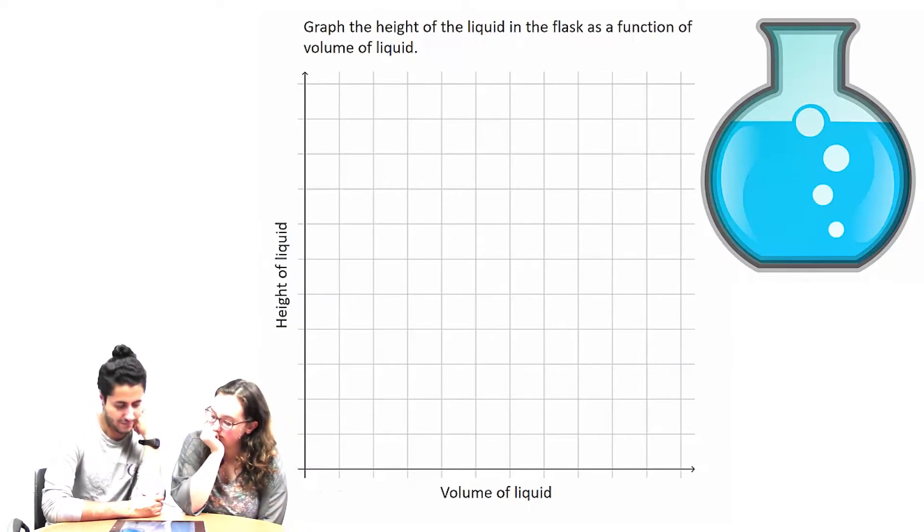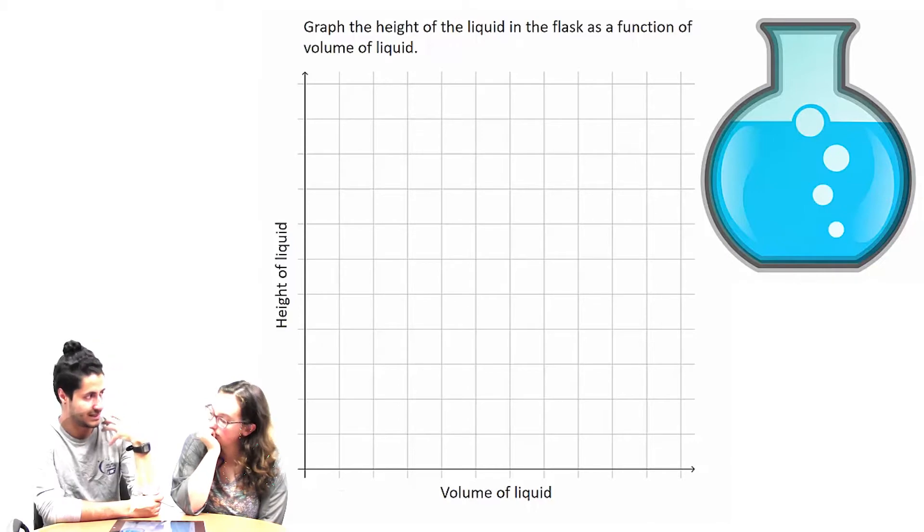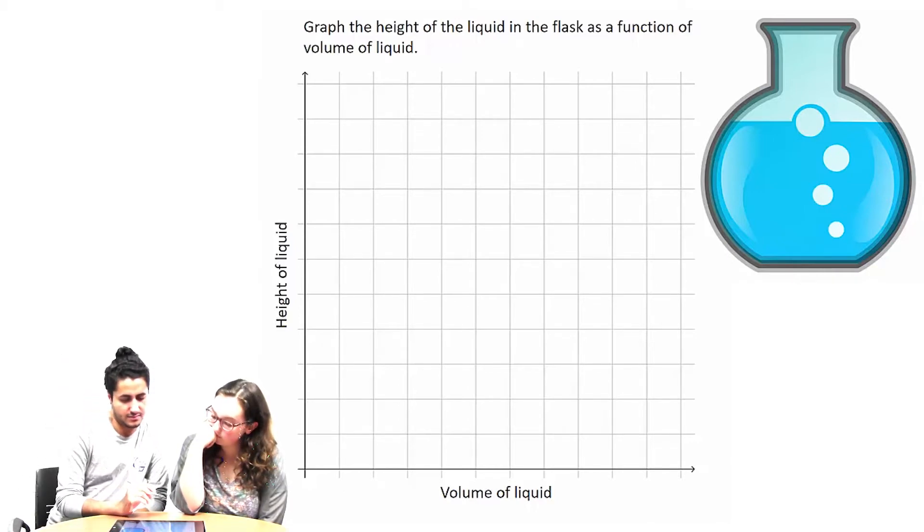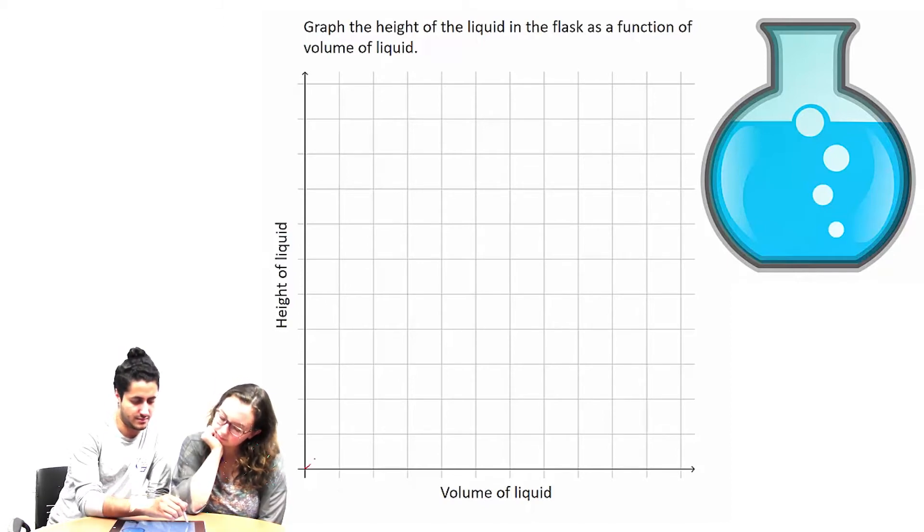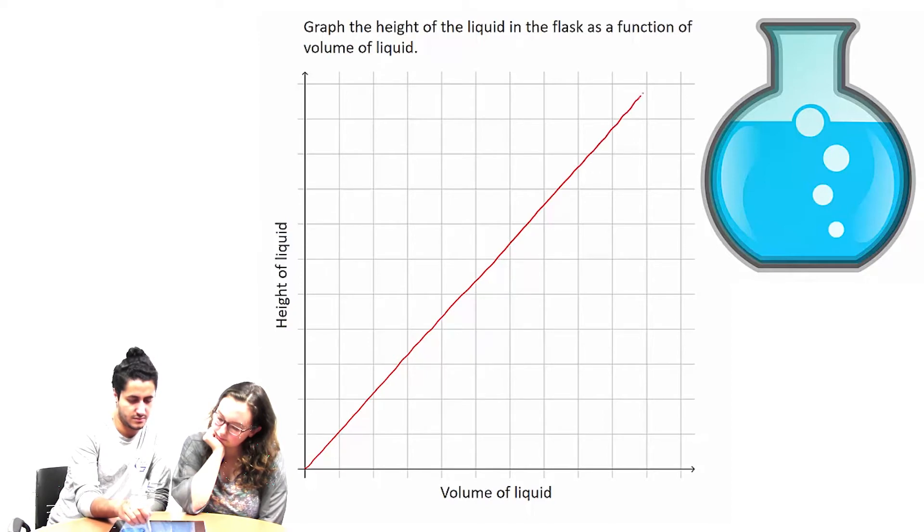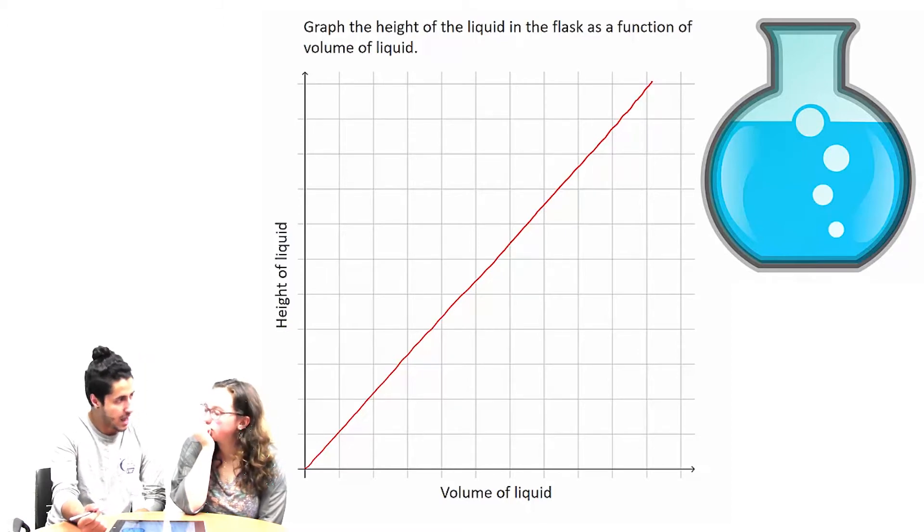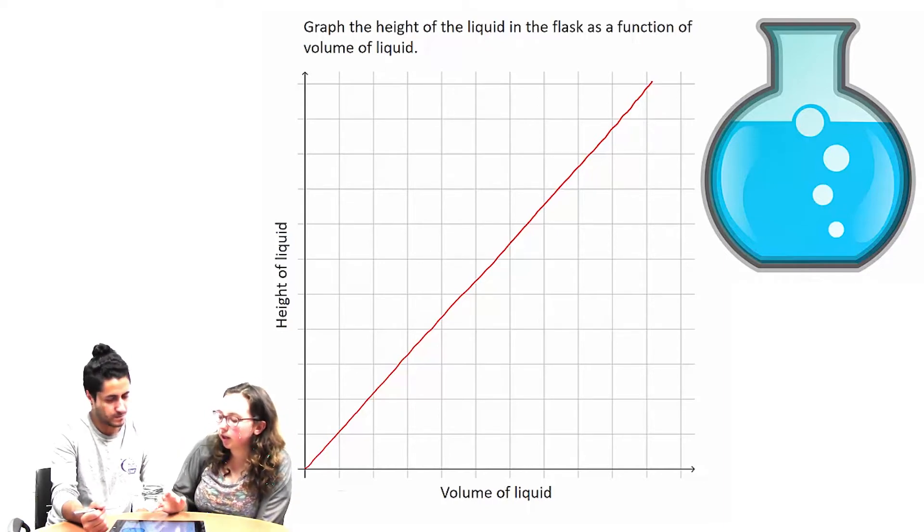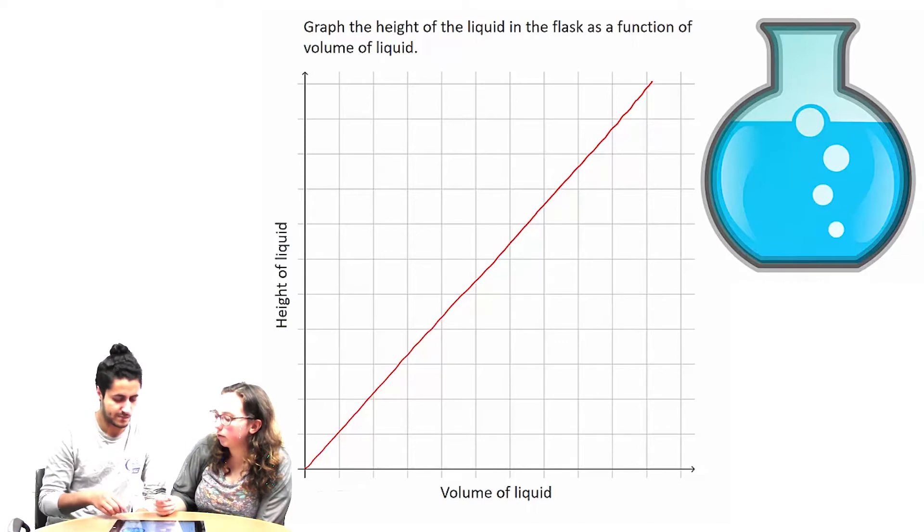My first instinct would be it being linear—it seems like the water will be rising, so the height has to rise. I mean, that doesn't really take into consideration the shape of the flask, though.